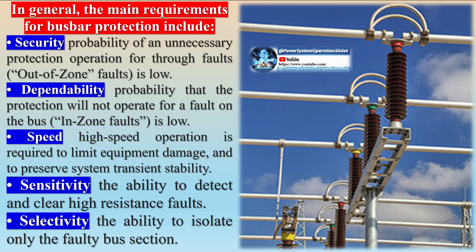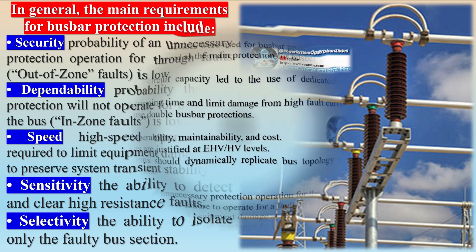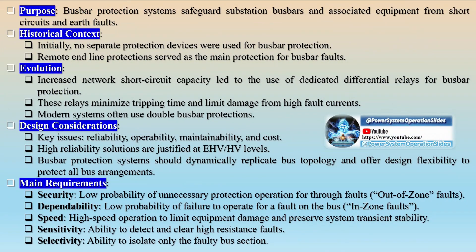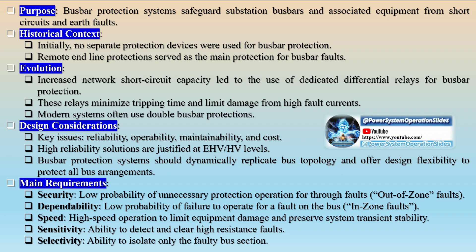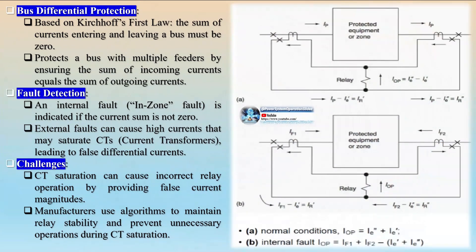The busbar differential protection relays compare the currents entering and leaving the busbar. If there is a fault, such as a short circuit, the current entering the busbar will differ from the current leaving, resulting in a differential current that exceeds a predetermined threshold. This triggers the protection system to isolate the faulty section by tripping the relevant circuit breakers.